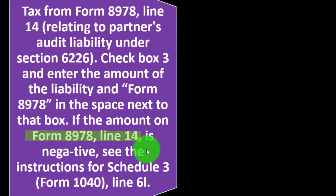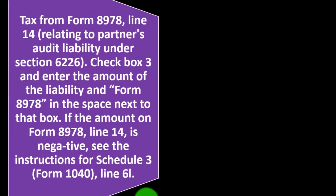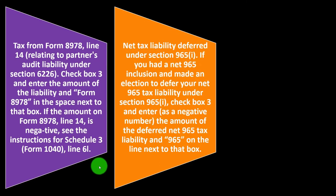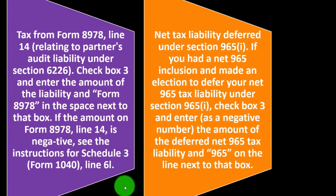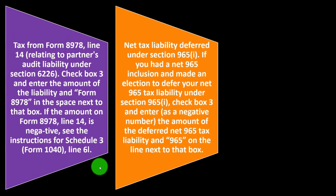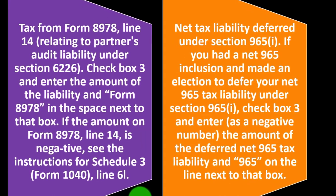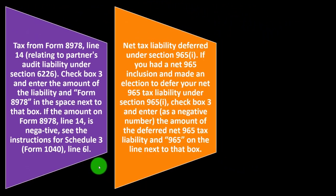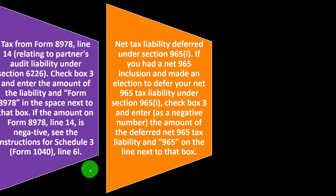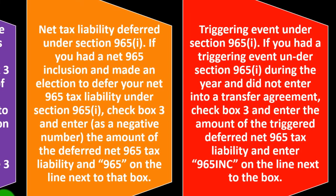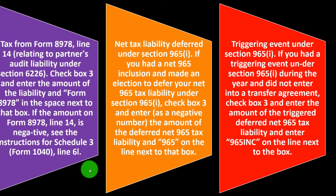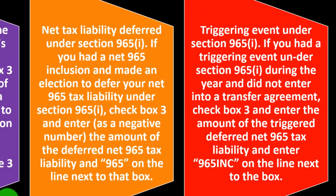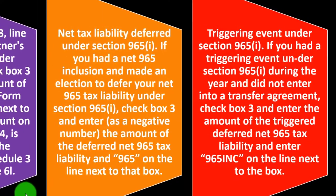If the amount on Form 8978 line 14 is negative, see the instructions for Schedule 3, Form 1040, line 6I. Net tax liability deferred under Section 965(i): if you had a net 965 inclusion and made an election to defer your net 965 tax liability under Section 965(a)(i), check box three and enter as a negative number the deferred net 965 tax liability and '965' on the line next to that box. Triggering event under Section 965(i): if you had a triggering event during the year and did not enter into a transfer agreement, check box three and enter the amount of the triggering deferred net 965 tax liability and enter '965INC' on the line next to the box.